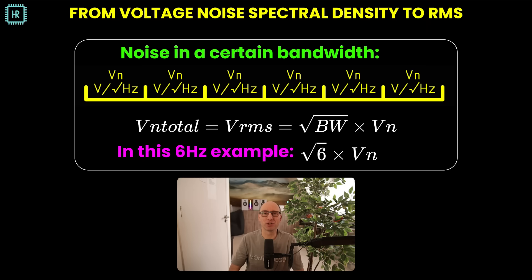Now that you know how to add noise sources, let's apply this to calculating RMS noise voltages from a noise floor with a given voltage noise spectral density. You can think of such a floor as a number of independent noise sources with a bandwidth of 1 Hz. To get the total noise voltage in a given bandwidth, you simply multiply the voltage noise spectral density by the square root of the bandwidth — in this example, a band of 6 Hz means the square root of 6 times the noise voltage. Now you know where the square root of the bandwidth comes from.